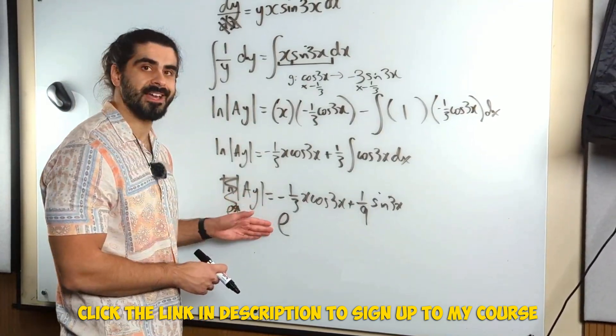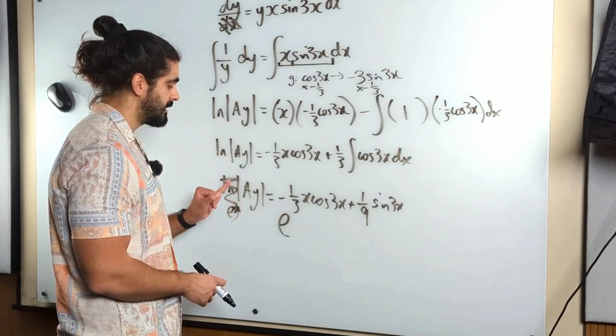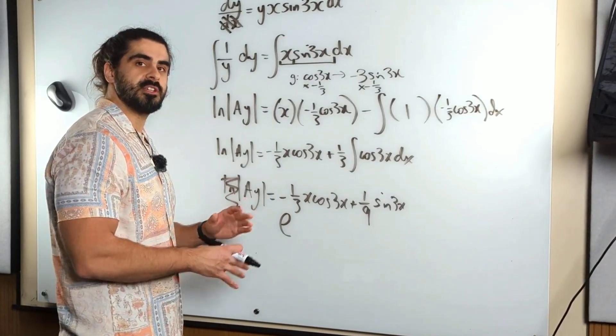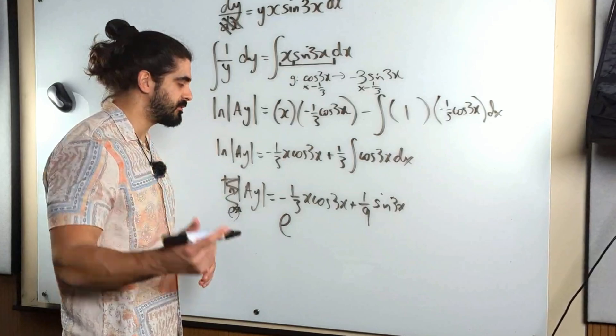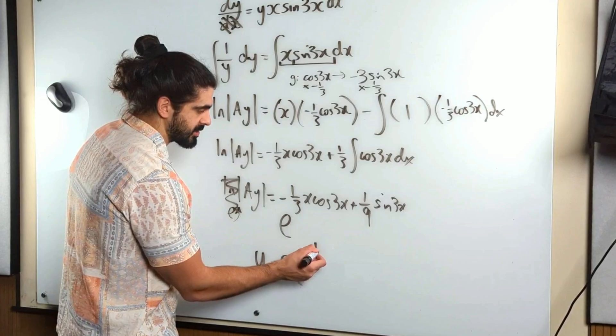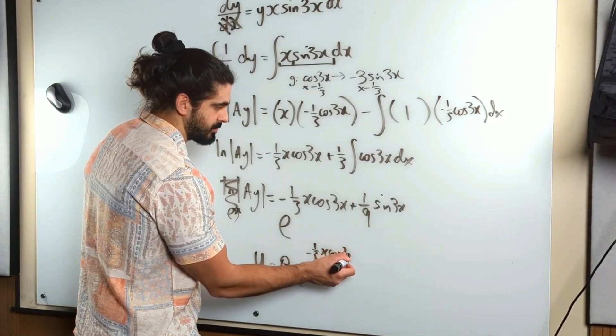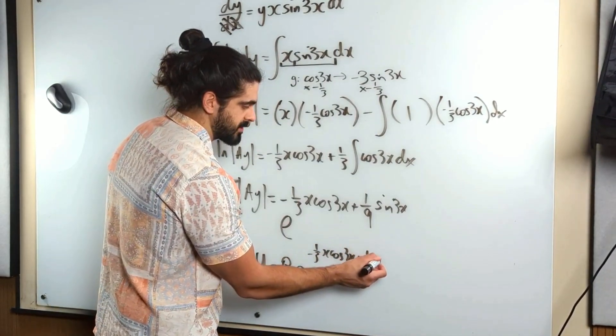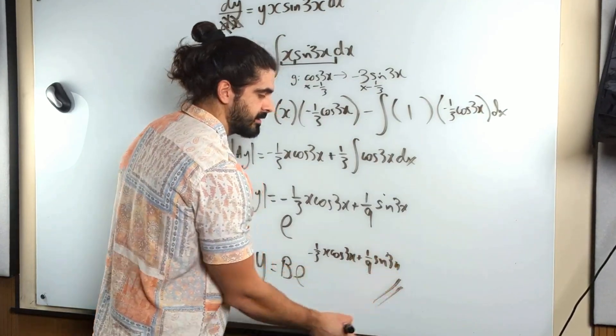But dividing by a you'll have 1 over a here. 1 over an unknown constant is just a constant we don't know. We just redefine it as b. So my final answer is b e to the power of minus a third x cos 3x plus a ninth sin 3x. Boom. Nice.